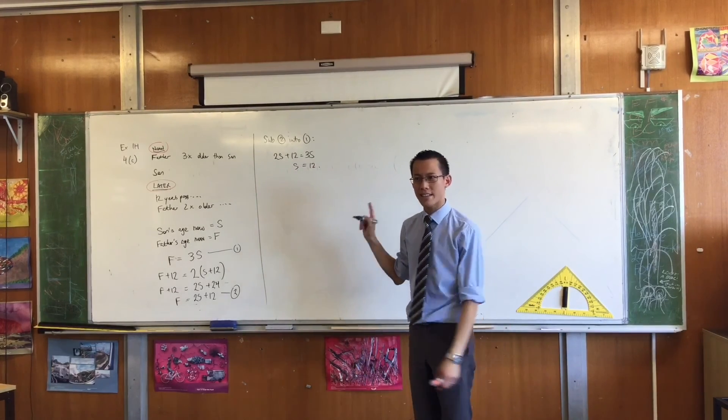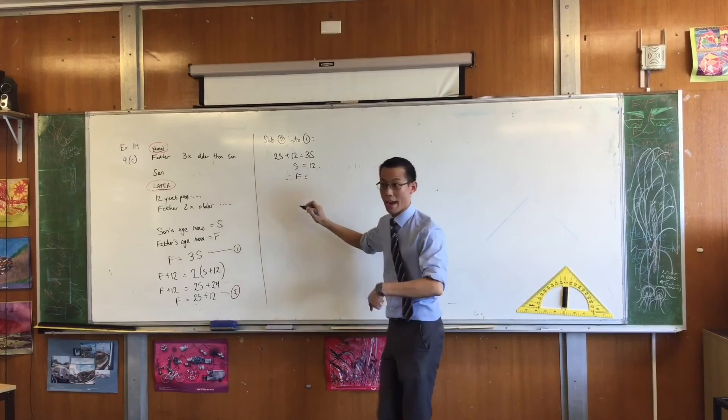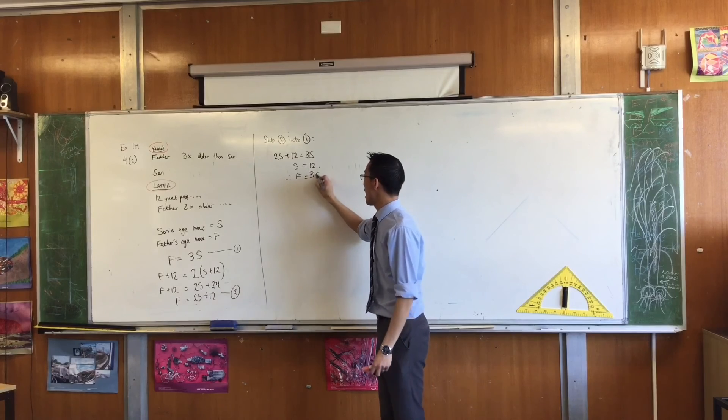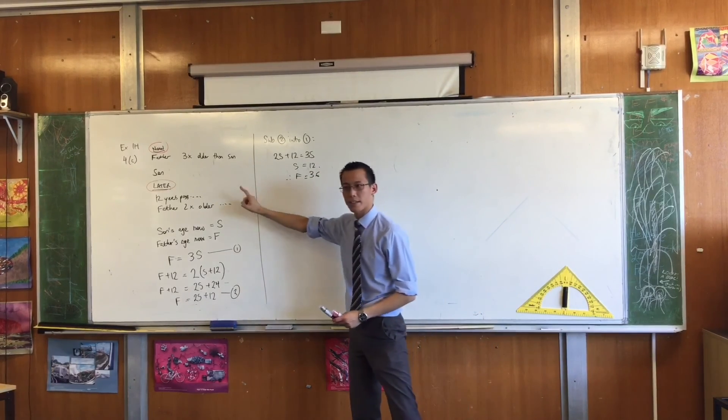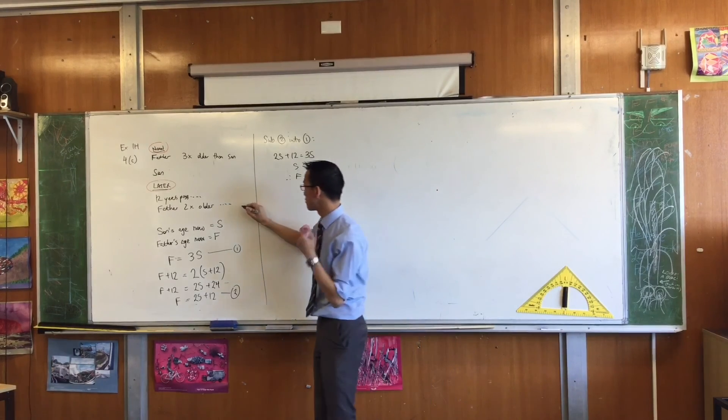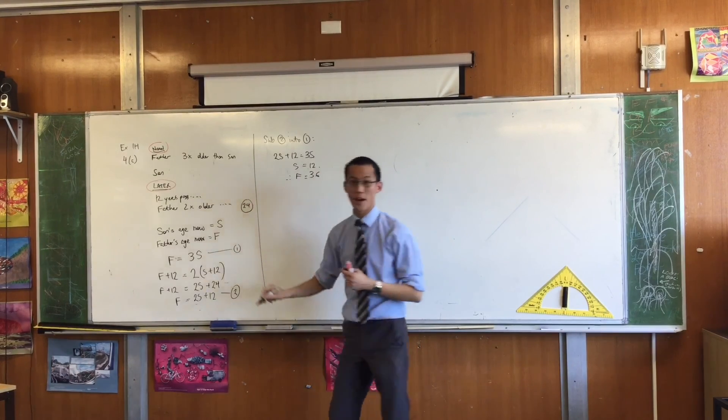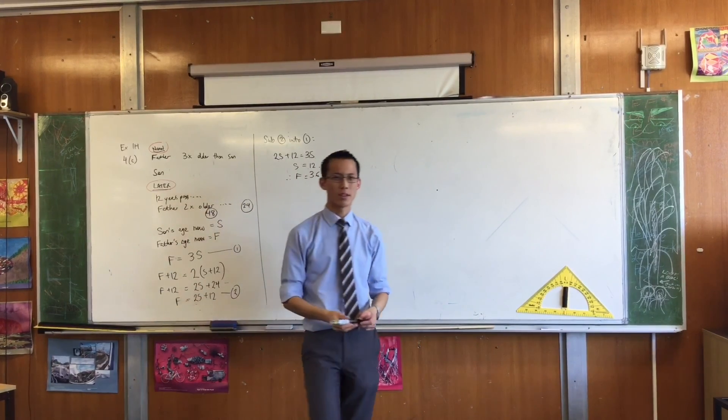So therefore the father's age right now. And of course you can just double check that. Does it work? When 12 years pass, how long will the son be? He'll be 24. And what about the father? 48. Which is indeed twice his own. Okay.